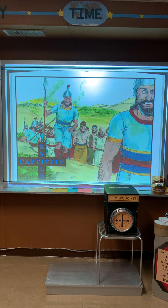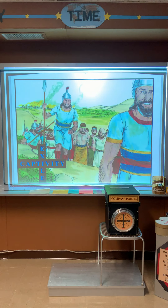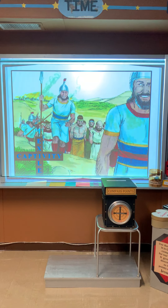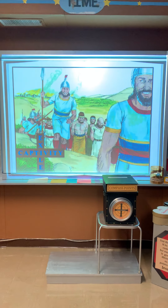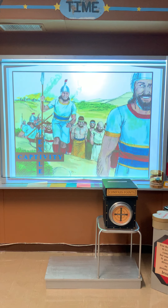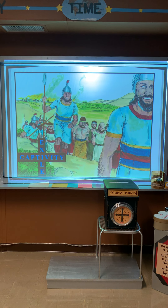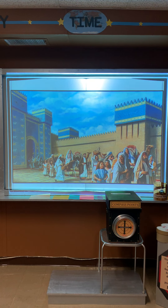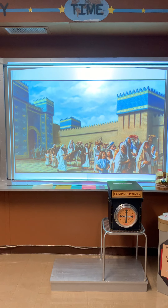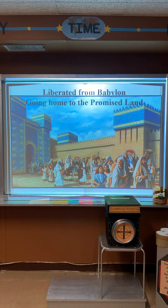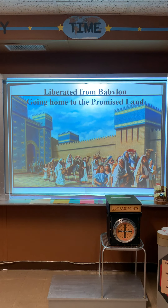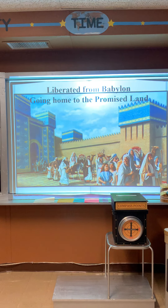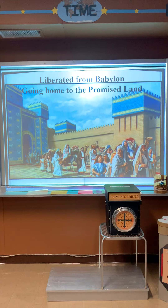Hundreds of years later, the Israelites — who had become known as the Jews — were taken into exile and captivity by two different countries. The northern kingdom was captured by Assyria, and the southern kingdom of Judah was taken captive by Babylon. After about 70 years in Babylonian captivity, God worked through the Persian king Cyrus to liberate the Jews. They were allowed to return to Jerusalem, rebuild the city wall, and rebuild the temple.